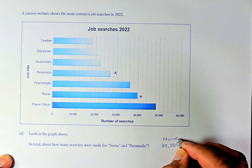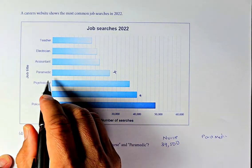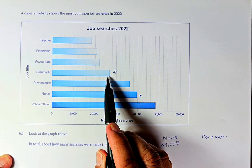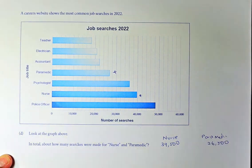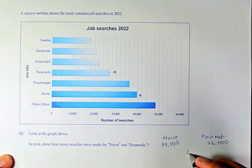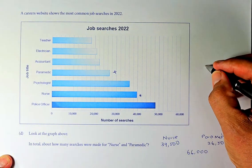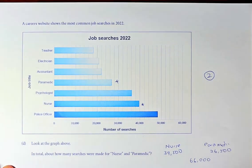So nurse, okay. And for paramedic, we're going to do the same for paramedic. So paramedic is here. So from here is 20,000, 22, 24, 26 and a bit of half of it. So paramedic is going to be 26,500. So the total number of searches for nurse or paramedic, you're going to add these two numbers together. And that will come up to around 66,000. So that is skill outcome number two. And we proceed now to question 1E.